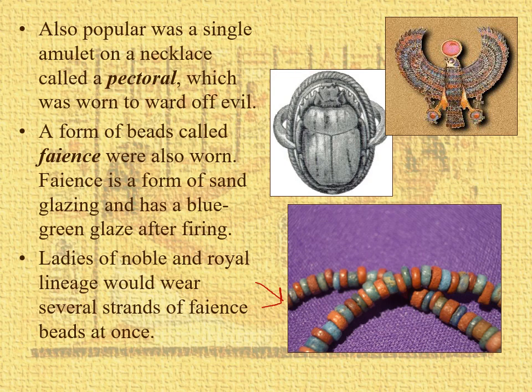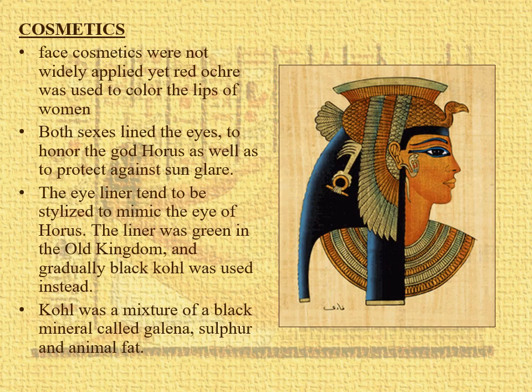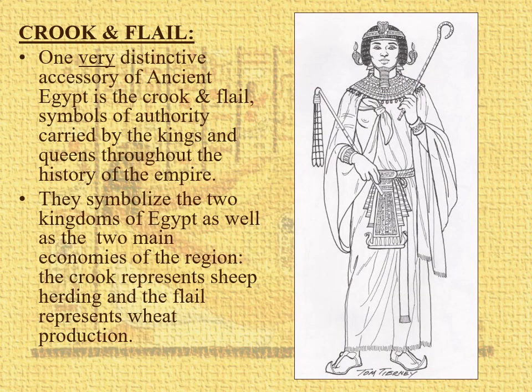You can see here alternating bands of a kind of red and a different kind of faience in the blue-green. These faience beads were worn several strands at a time. A little bit about cosmetics: face cosmetics were not widely applied, except we do have red ochre used to color the lips of women. Outlining the eyes is very characteristic — this eye of Horus look — using kohl, which is a mixture of a black mineral called galena, some sulfur, and some animal fat to make it pasty. Also very characteristic is the crook and flail, carried by a pharaoh, symbolizing the two initial kingdoms of Egypt: the crook represents sheep herding, and the flail represents wheat production.